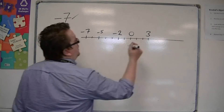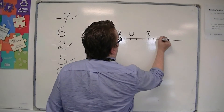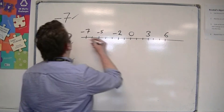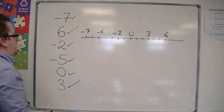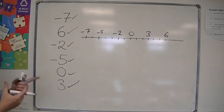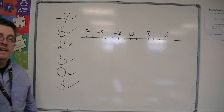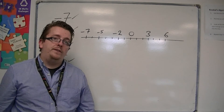And then we would have the four, five, the six. And that would put the six numbers in order of size.